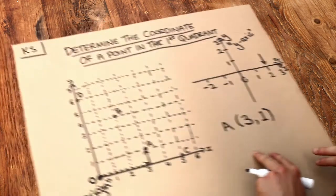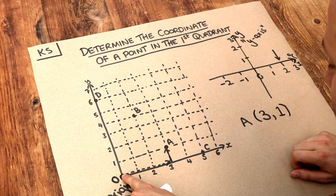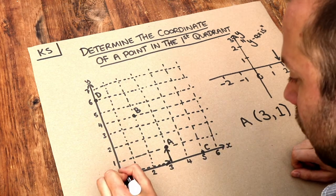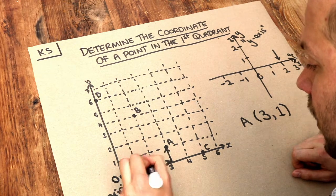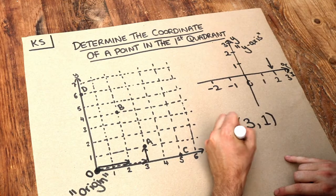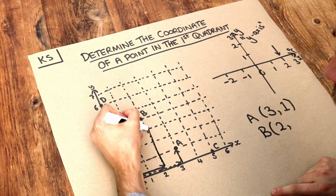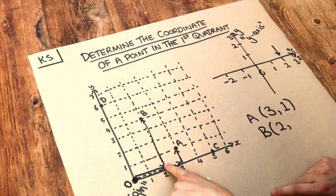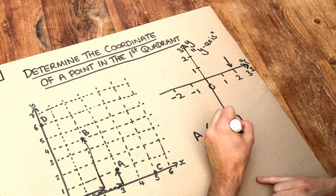Let's do another example. We want the coordinates of the point B. So how far do we have to go across the x-axis? Well, can you see, starting from the origin we have to go along two until we're directly under B there. So the x value of this coordinate is going to be two, and then can you see we have to go four up the y-axis, the up-down number line. So we're going to put a four here.